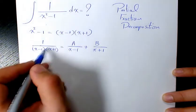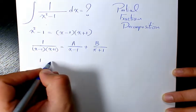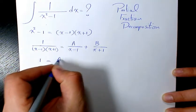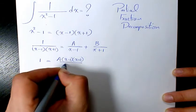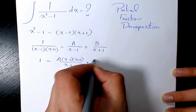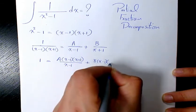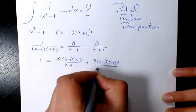We multiply both sides by x minus 1 times x plus 1. So these two cancel out. When you multiply it, it's just going to be 1. Here we will have A times x minus 1 times x plus 1 divided by x minus 1. Here you have B times x minus 1 times x plus 1 divided by x plus 1.